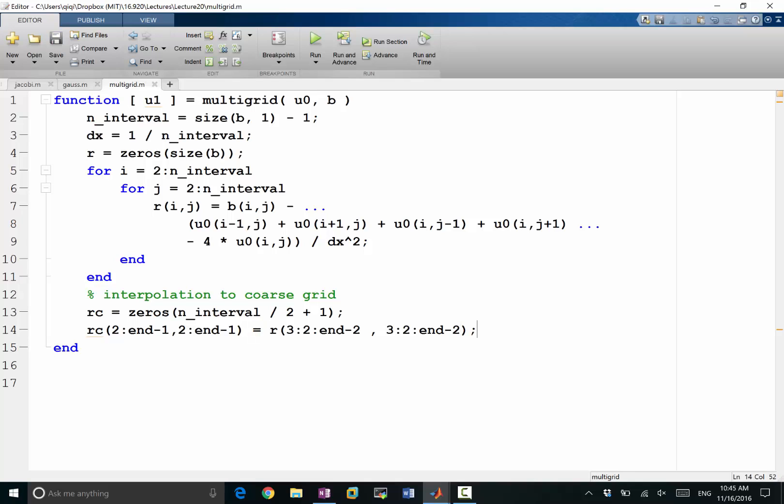Okay, so now I have the interpolation to the coarse grid. On the coarse grid I want to perform iterations on the coarse grid.